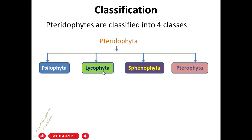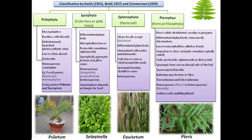Pteridophytes are classified into four classes: Psilophyta, Lycophyta, Sphenophyta, and Pterophyta. Psilophyta is the most primitive — rootless with rhizoids, dichotomously branched stem, leaves often absent, and homosporous. Fossil genera include Rhynia and Horneophyton, while living genera include Psilotum and Tmesipteris.